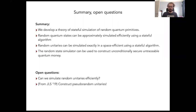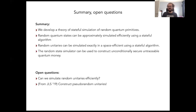Here's a summary and some open questions. We have developed a theory of stateful simulation of random quantum objects. For random quantum states, we can do an efficient stateful simulation. For random unitaries, we can do a stateful simulation that is space-efficient, using polynomial space in the number of qubits and queries. As an application, we construct an unconditionally secure and untraceable quantum money scheme using the random state simulator. Open questions include: can we simulate random unitaries efficiently in polynomial time? And an extremely interesting open question from Ji, Liu, and Song (2019): can we construct pseudorandom unitaries? Thank you very much.